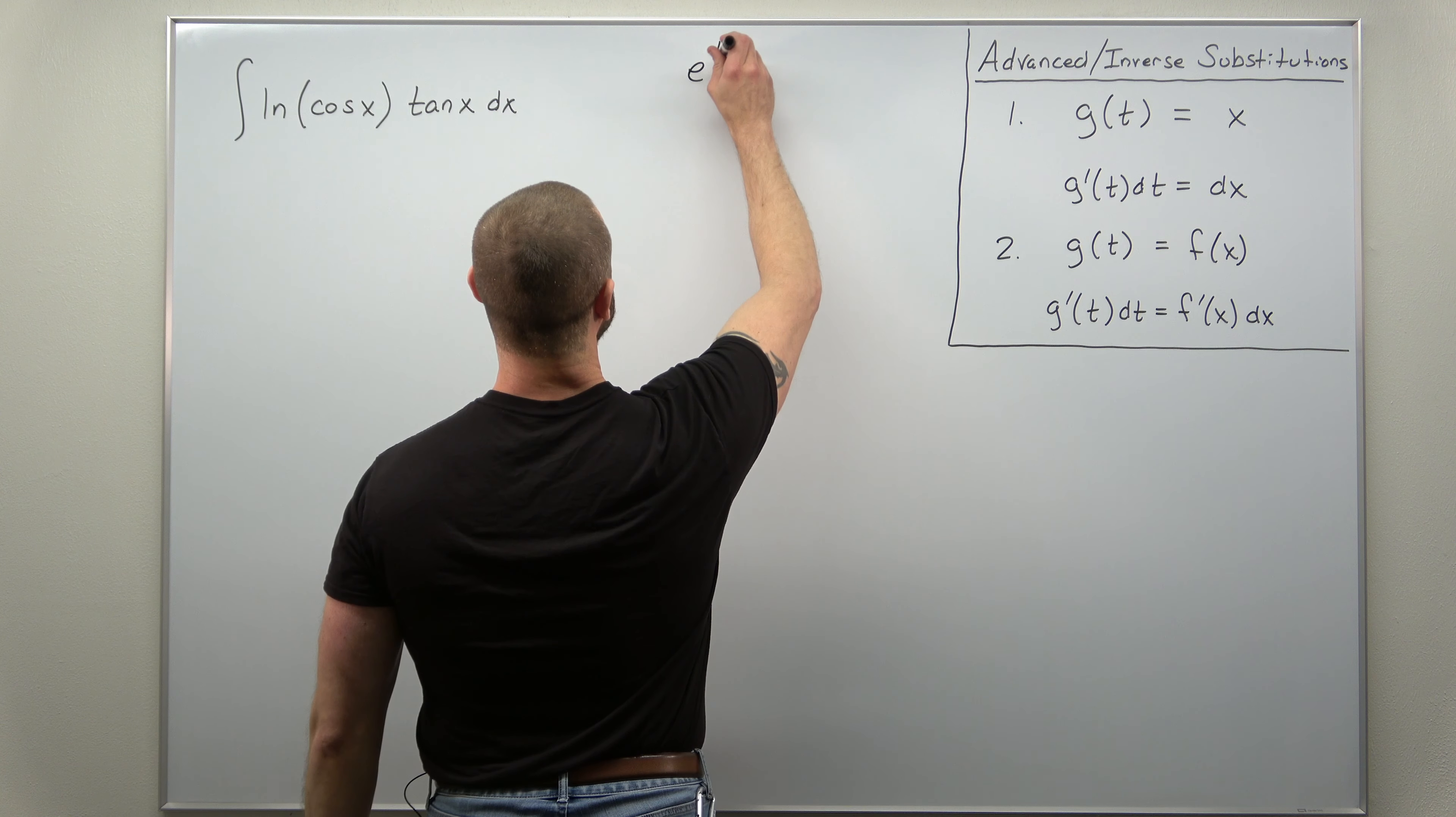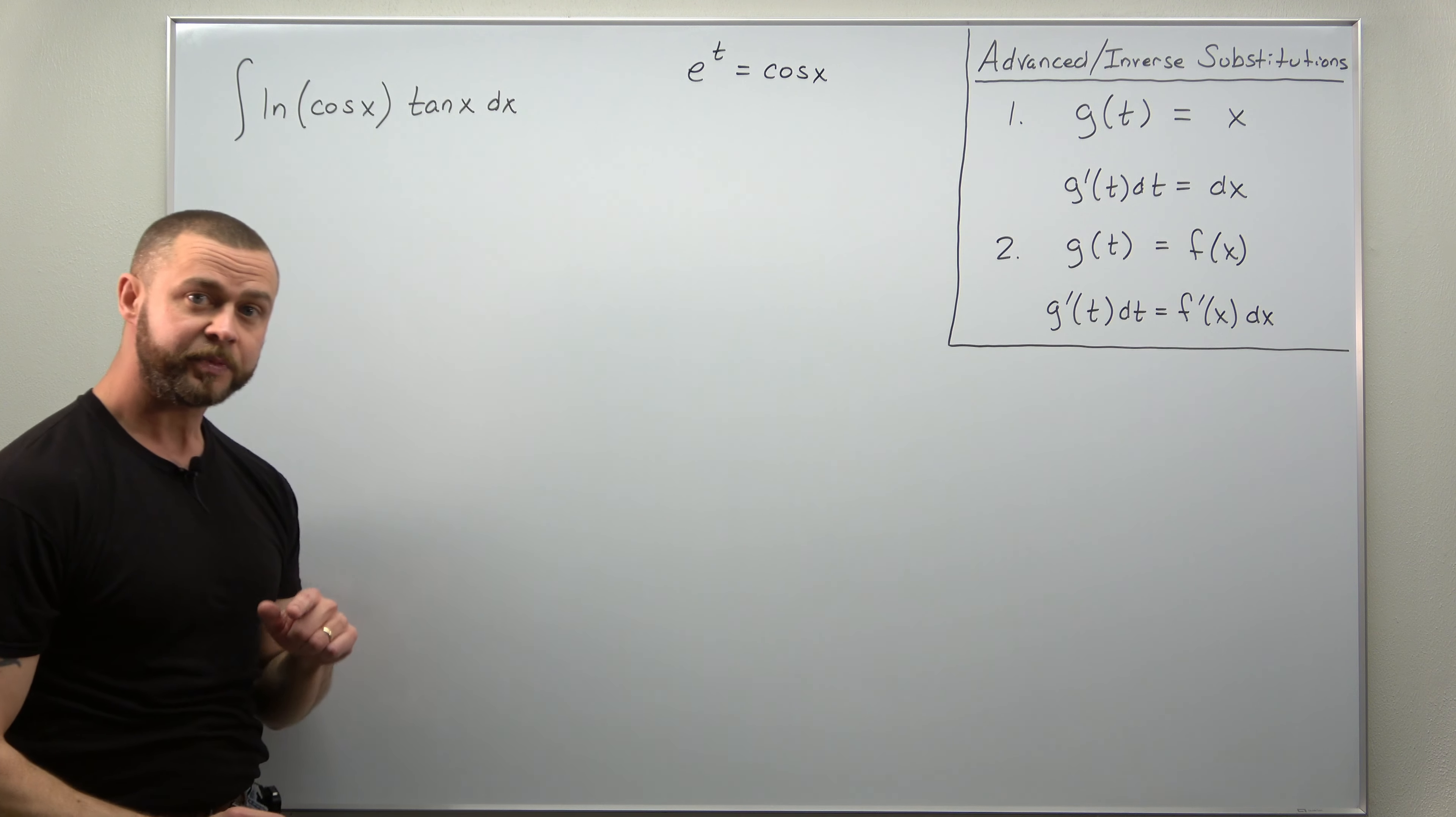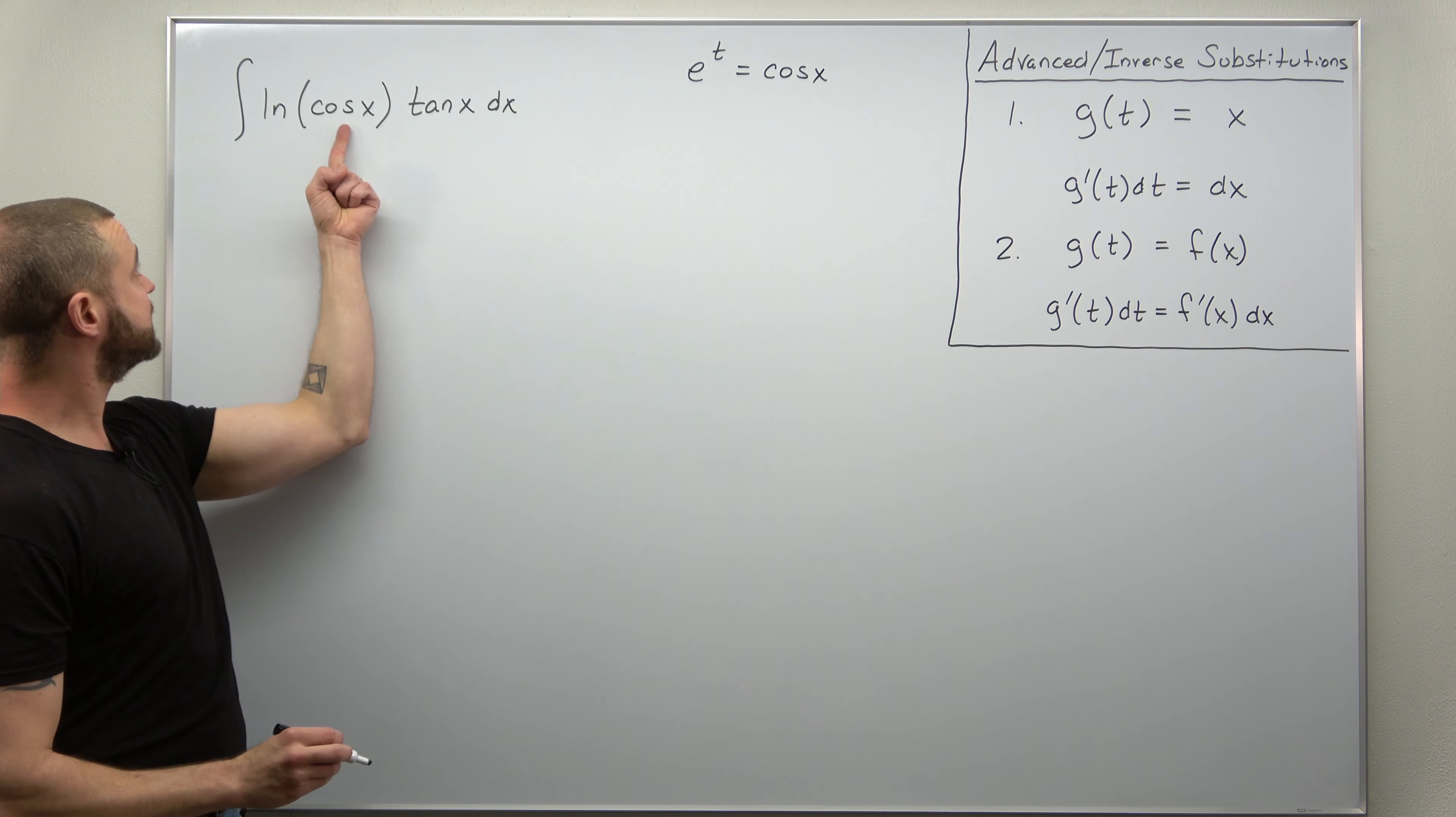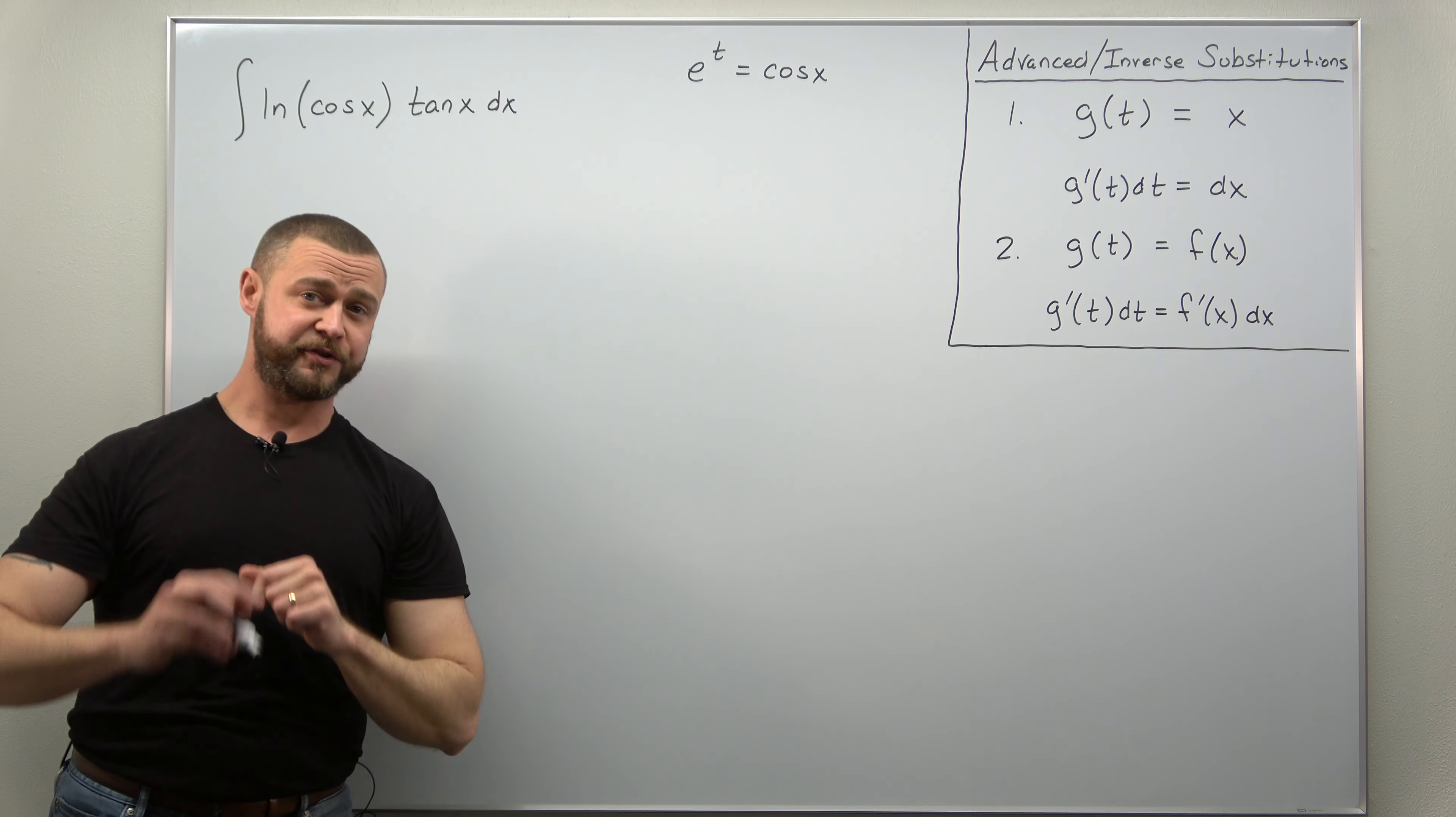So let's write that down: e to the t equals cosine of x, and make sure you see why that's going to work here. If you go ahead and plug that in, replace cosine of x with e to the t, natural log of e to the t will cancel leaving you with just t.